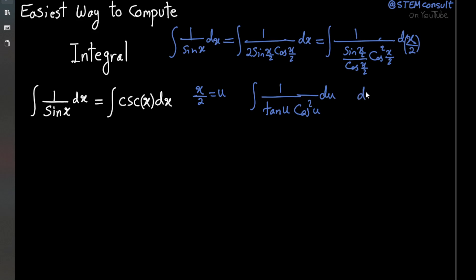It's also well known that d tangent u is simply 1 over cosine squared u du, and that's nice, because we have 1 over cosine squared u du here.